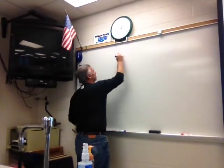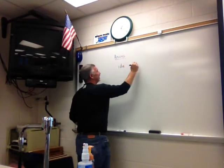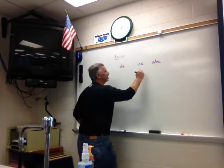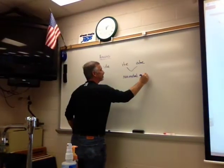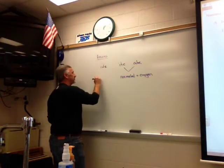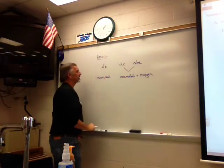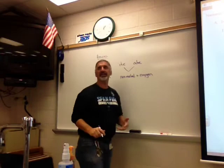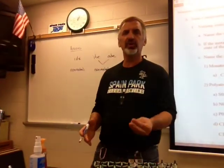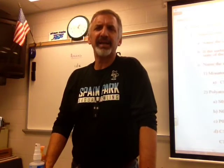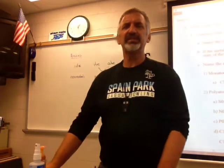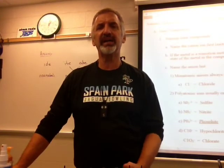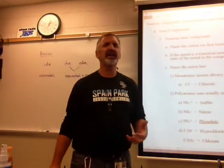Anions always have one of three suffixes: -ide, -ite, or -ate. The suffix -ite and -ate mean it's going to be a non-metal plus oxygen. The suffix -ide simply means it's going to be a non-metal by itself. For example: Cl minus is the chloride ion; F minus is fluoride; O2 minus is oxide; N3 minus is the nitride ion. Anytime you have just the non-metal by itself, it's going to end in -ide.